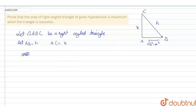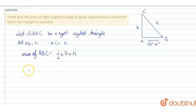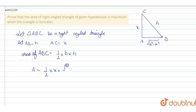We have area of triangle ABC equal to half into base into height. So area, which we represent as A, equals half into X into under root of H squared minus X squared.